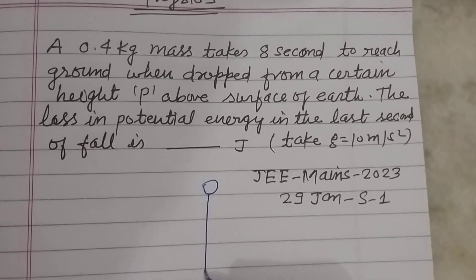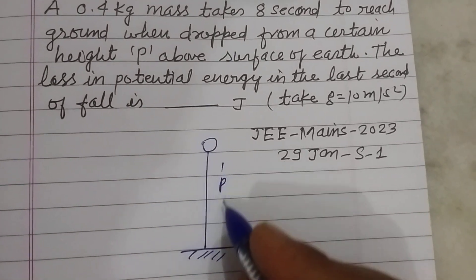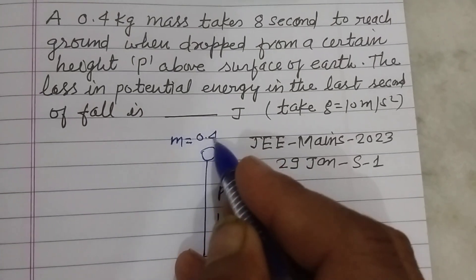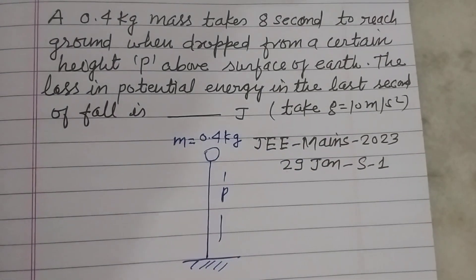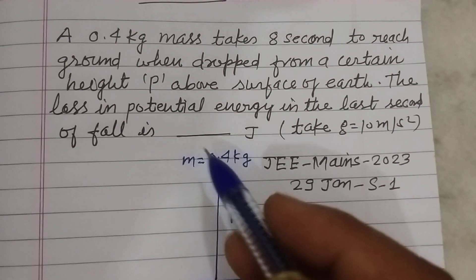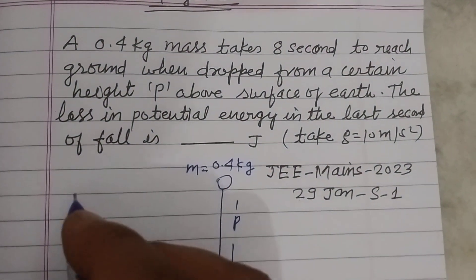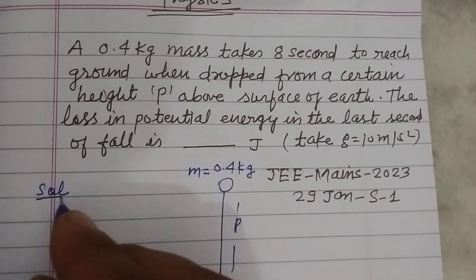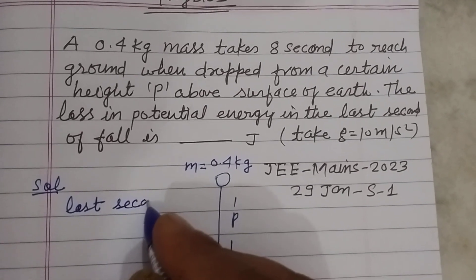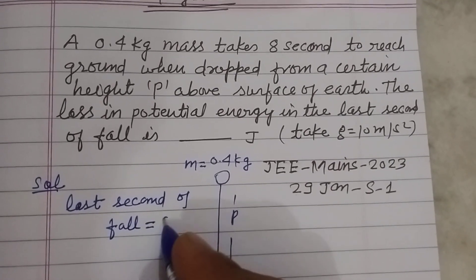this is a mass which is falling from a height P above the ground. Mass of the body is 0.4 kg. The question is asking the potential energy — loss in potential energy in the last second of fall. So total time of fall is 8 seconds, and the last second of fall is the 8th second.